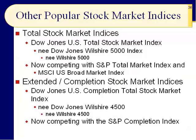We are reviewing two indices I want you to remember: the Dow Jones U.S. Total Stock Market Index, which used to be called the Wilshire 5000 — which is what I still call it — and the Dow Jones U.S. Completion Total Stock Market Index, which I still call the Wilshire 4500. You take the top 5,000 companies and lop off the top 500 (the S&P 500 stocks), leaving mid-sized and small companies. Standard & Poor's has their own version, and MSCI has their own as well.